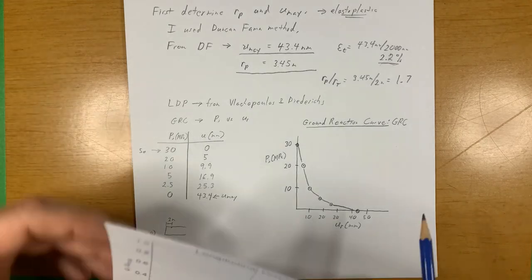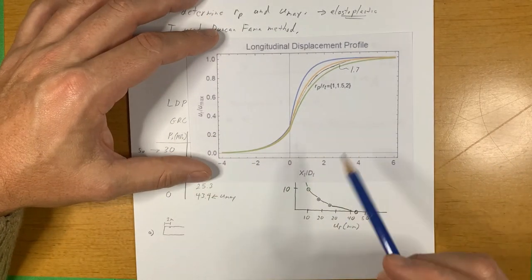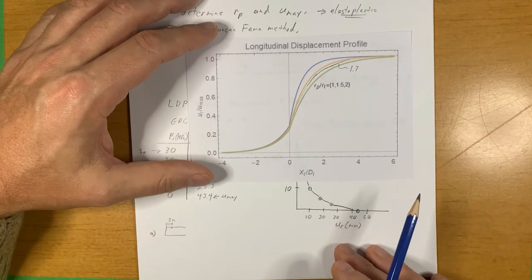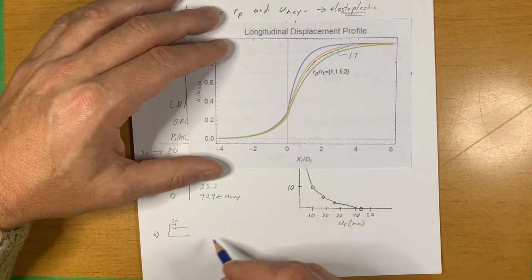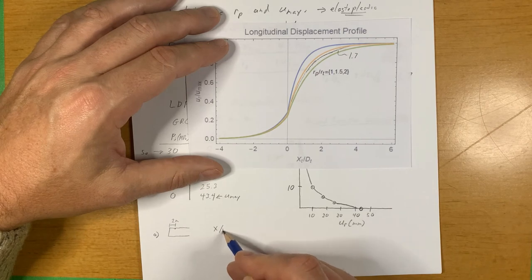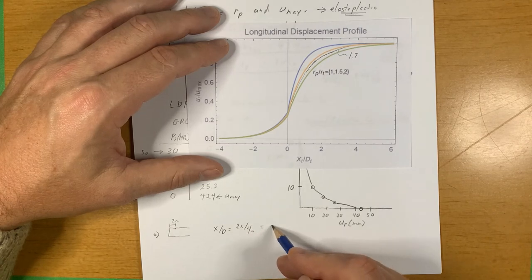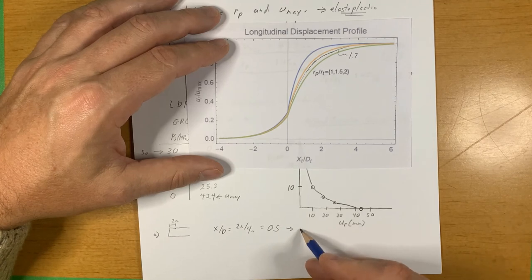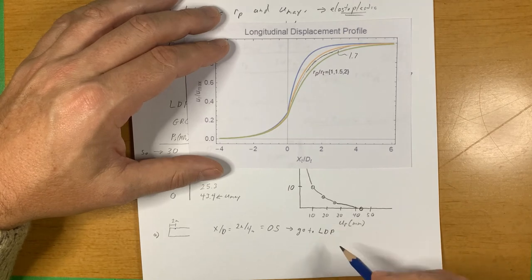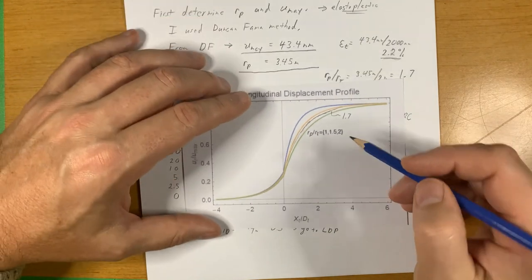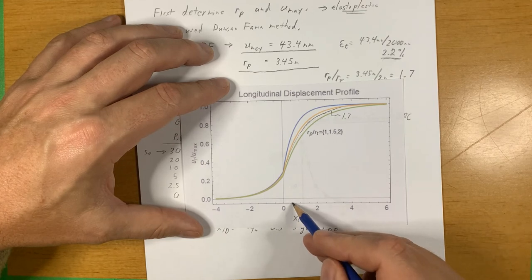First we want to go to our longitudinal displacement profile and we want to see what the ratio of U_r to U_max is at two meters behind the tunnel phase. We have X over D, and so we want X over D is two meters divided by four meters, which is 0.5. From there we want to go to the longitudinal displacement profile.